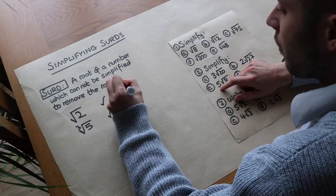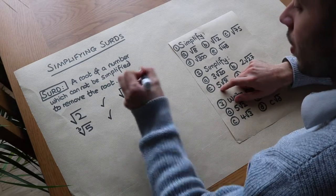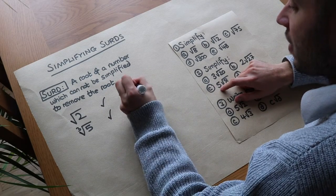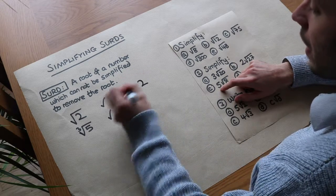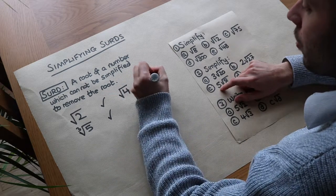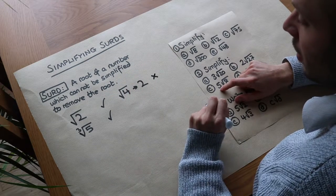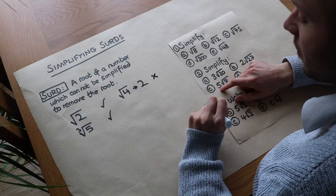But if I had the square root of four, well that can be simplified to two, which doesn't have a root, and therefore root four is not a surd.